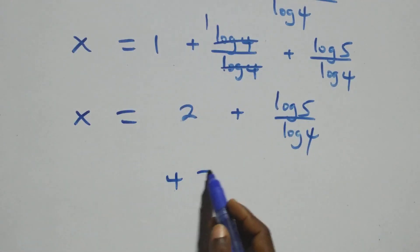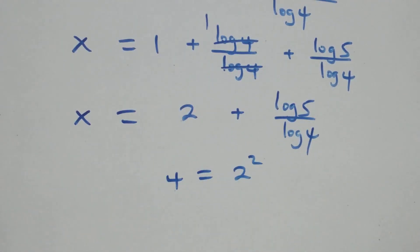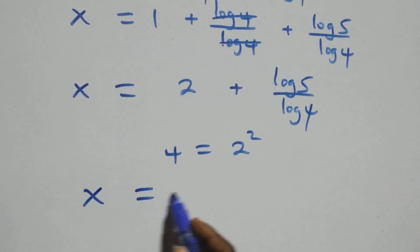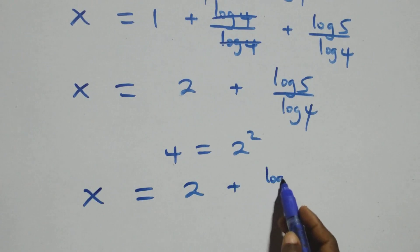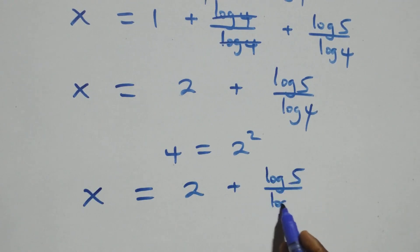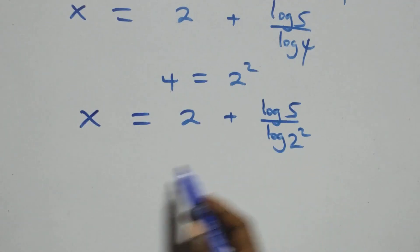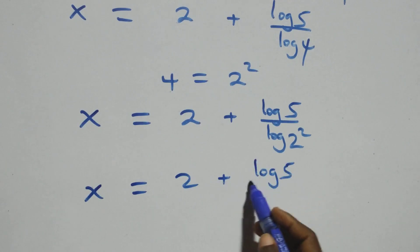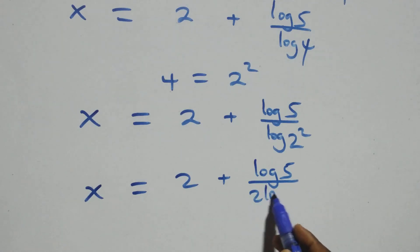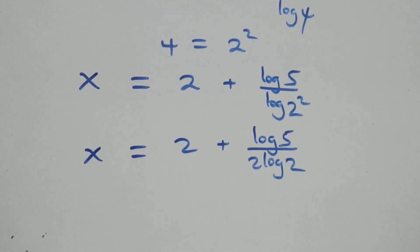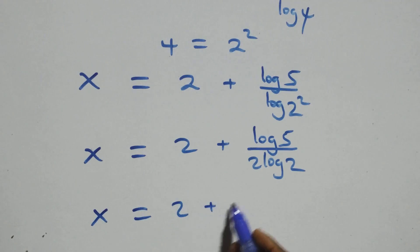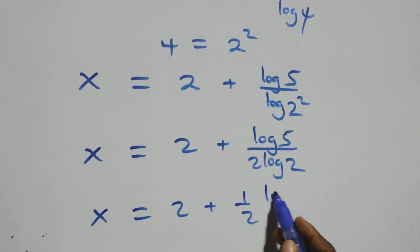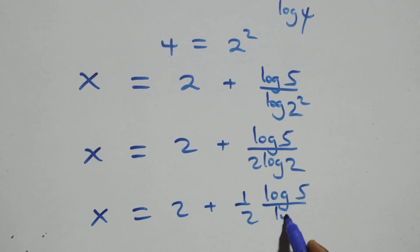We can express 4 as 2 times 2, which is 2 squared. So x equals to 2 plus log 5 over log 2 squared. Applying the power log rule, we can write this as x equals to 2 plus one half times log 5 over log 2.